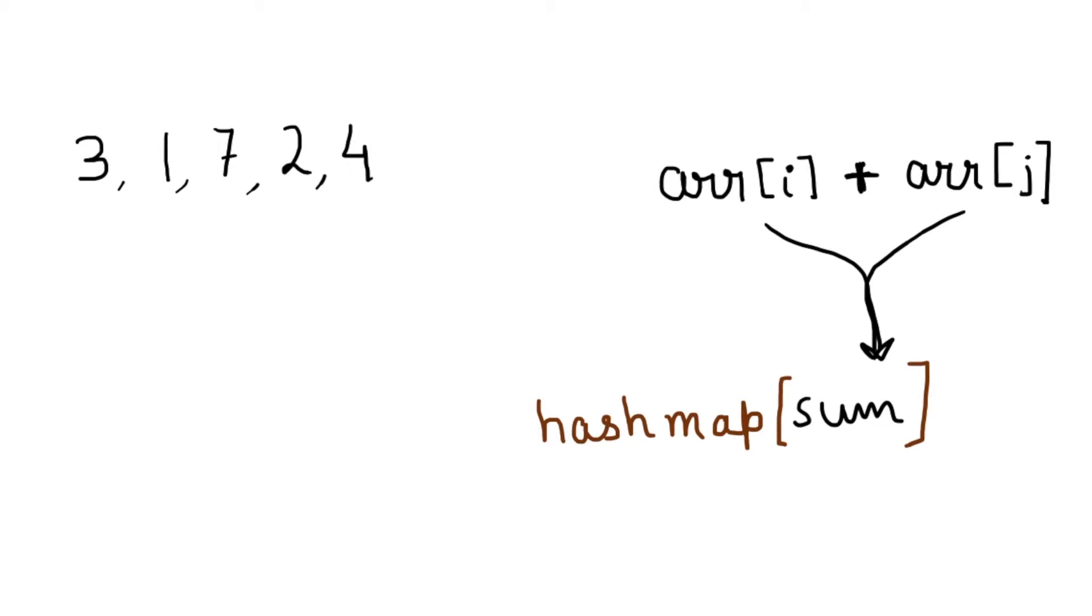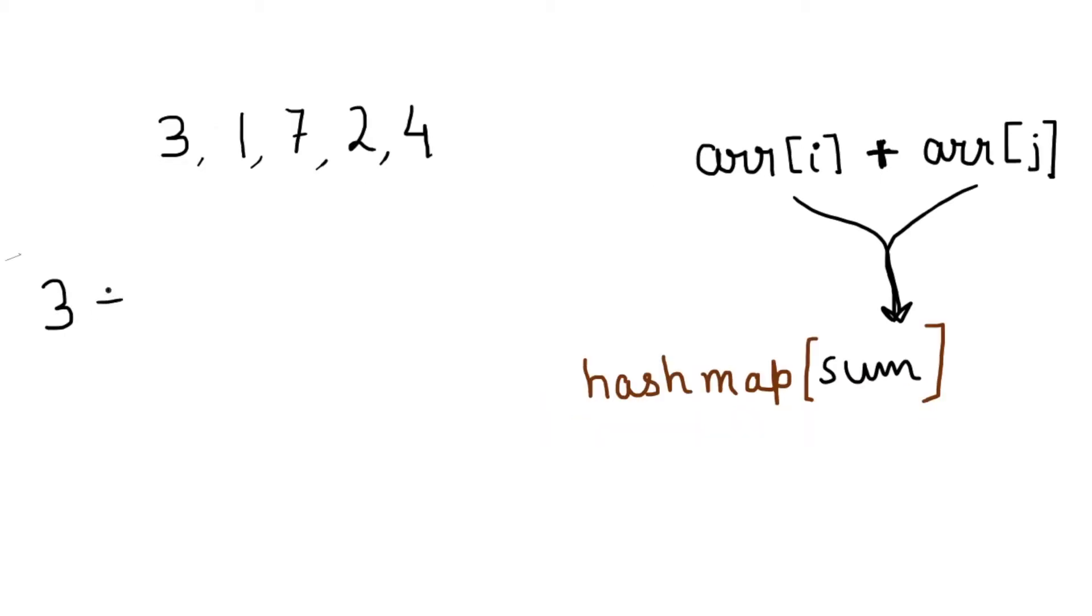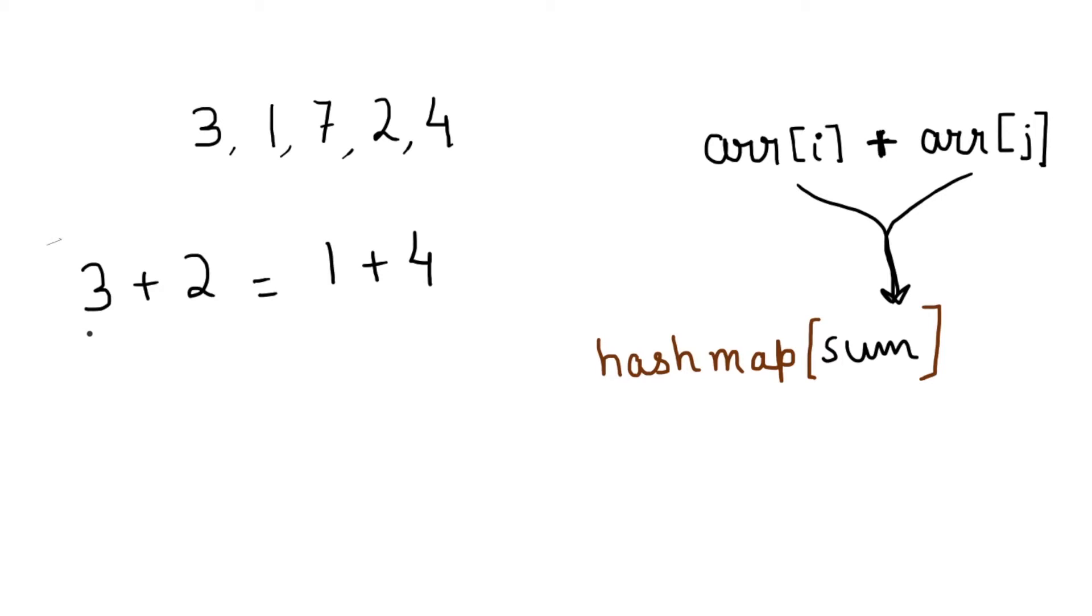Now I need to check whether there are four elements such that a plus b is equal to c plus d. Yes, if I take a equal to three, b equal to two, c equal to one, and d equal to four. Let's dry run this.